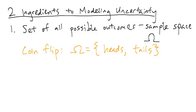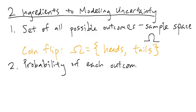The second ingredient we will keep track of is the probability of each possible outcome. We will denote probability using a P with two vertical lines. In the coin flipping case, we have, for a fair coin...